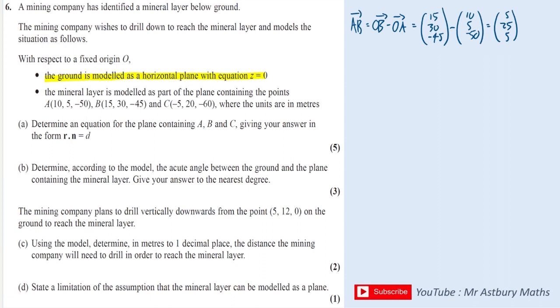And because we are only interested in the direction of this vector, we can simplify that by dividing through by a factor. So I can get (1, 5, 1).